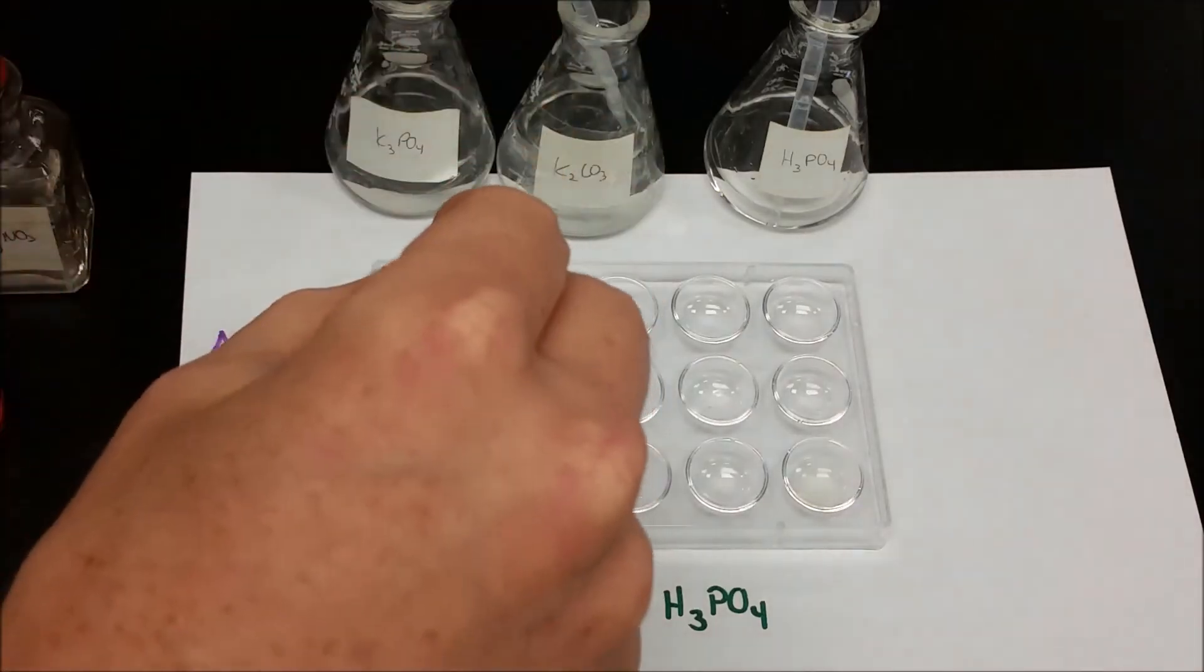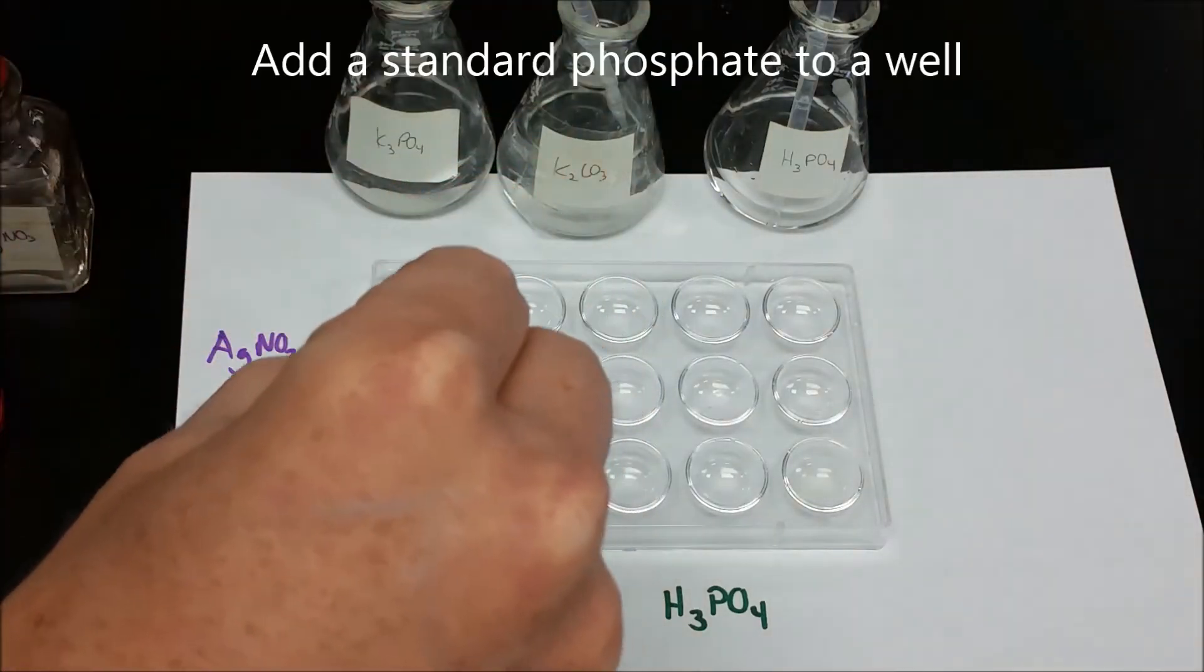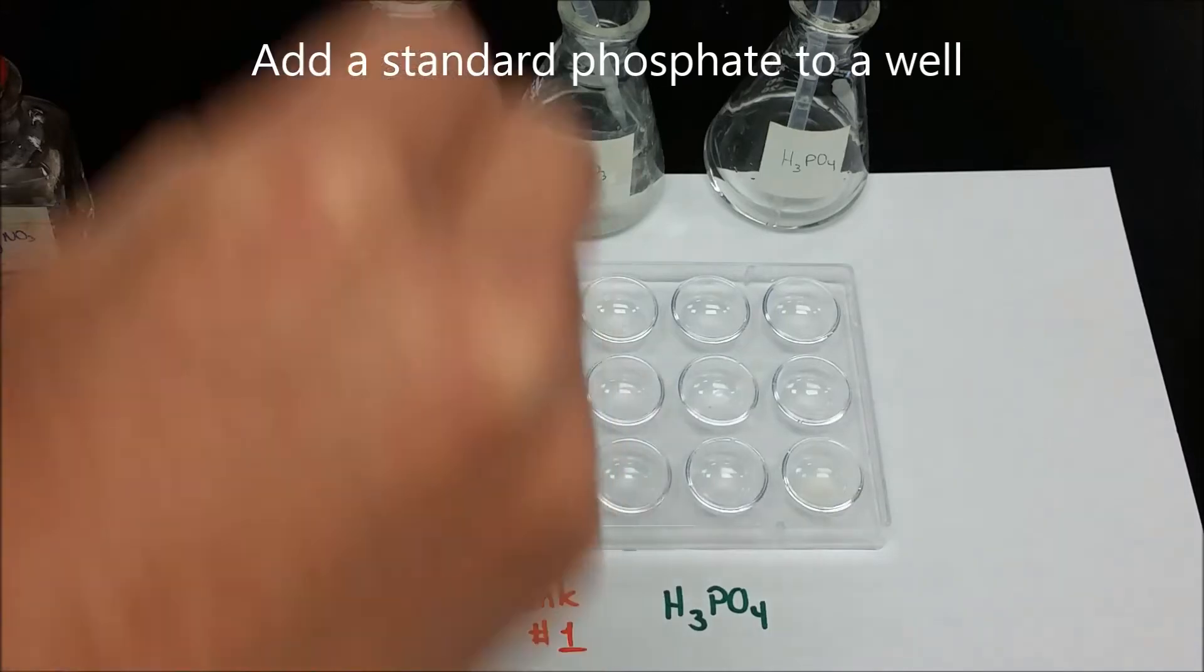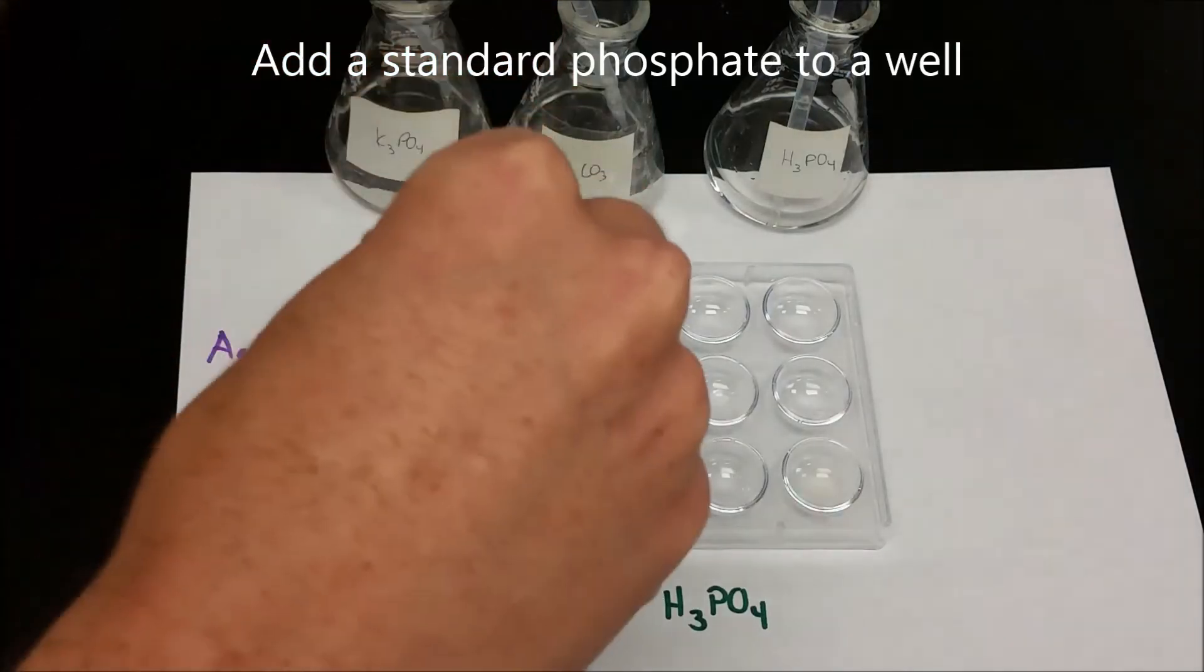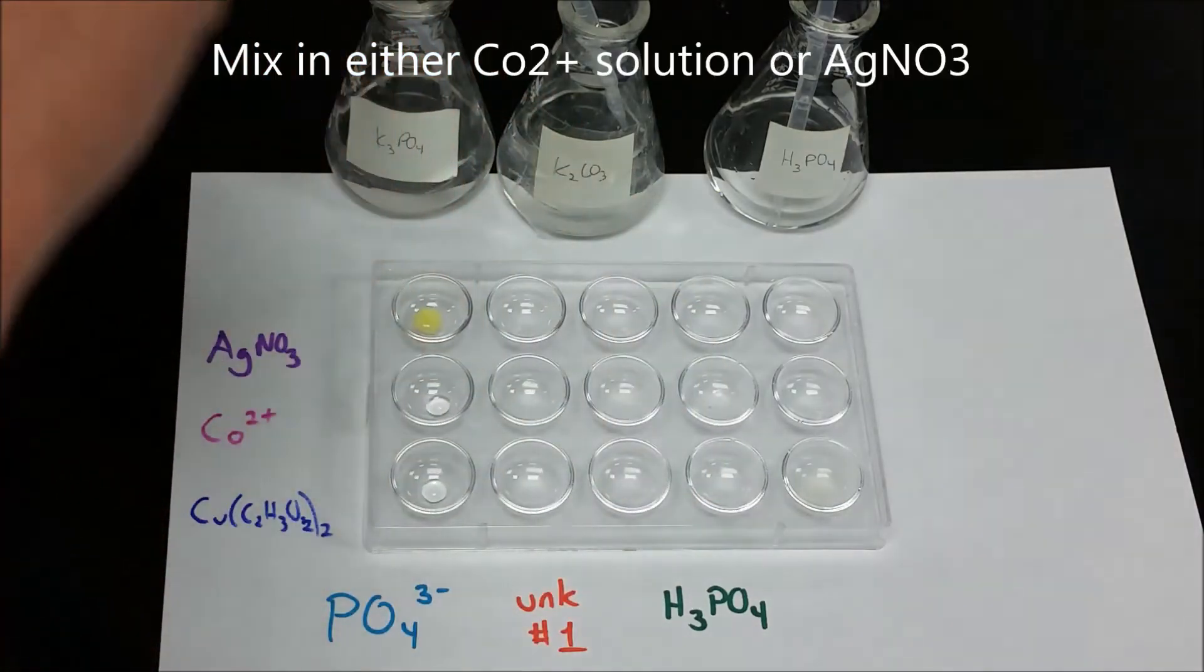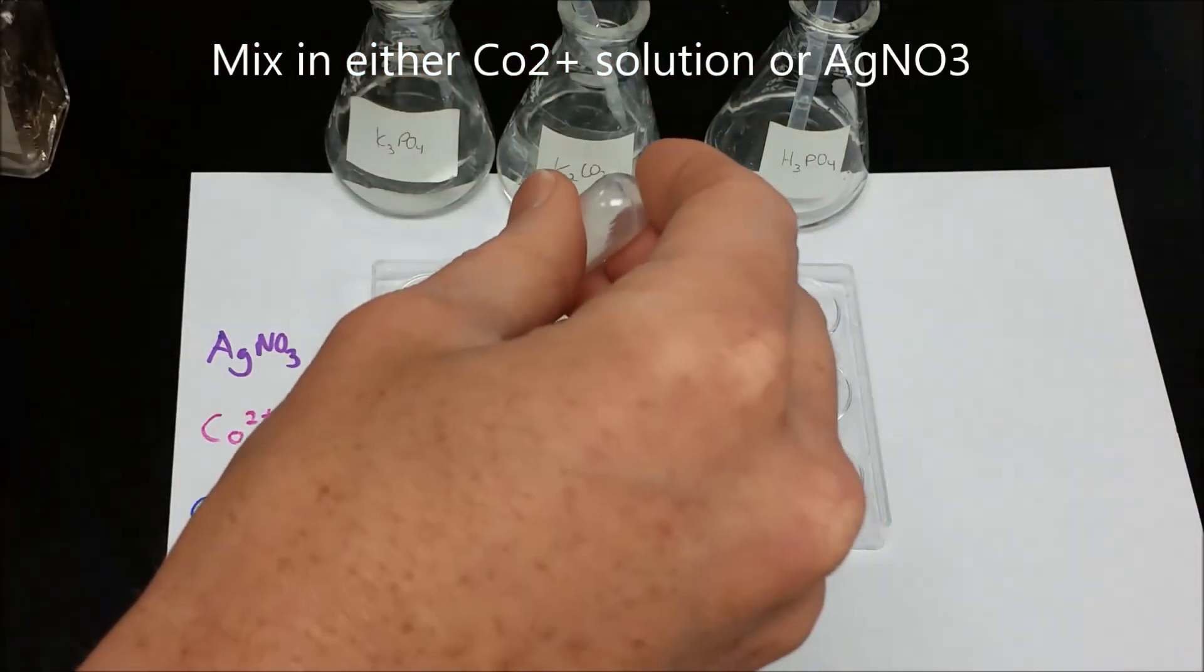In the phosphate test we want to do a couple steps. The first one is we're going to check to see if there's a phosphate. To do that you have two options: you can either try silver nitrate or you can try adding any cobalt compound.